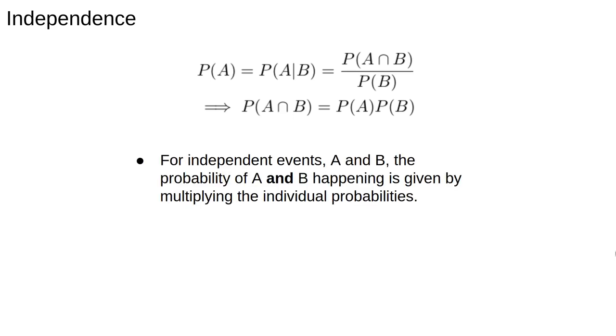Basically, if A and B are independent, the probability of A and B happening is given by multiplying the individual probabilities.